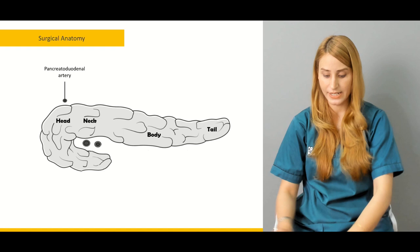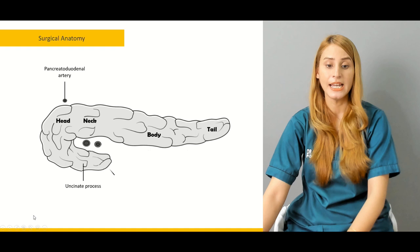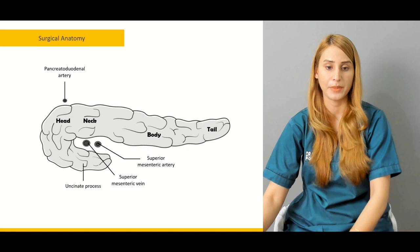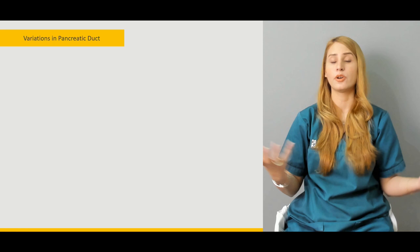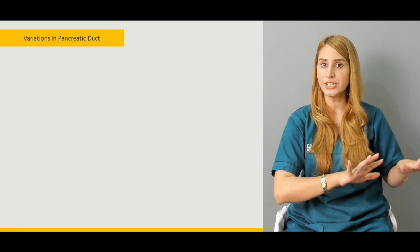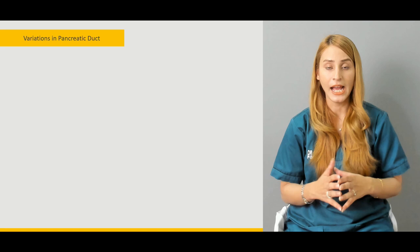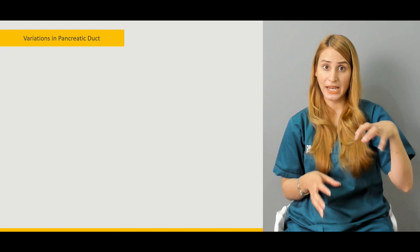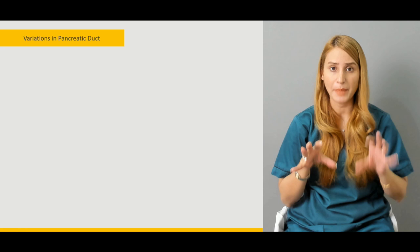The head of the pancreas is also related to the pancreatoduodenal artery. The uncinate process is related to the superior mesenteric artery and vein, which lie in front of it but behind the neck. Regarding embryology, there are two buds: the ventral pancreatic bud and the dorsal pancreatic bud. The dorsal bud forms the main pancreatic duct, which opens into the major duodenal papilla in the second part of the duodenum.